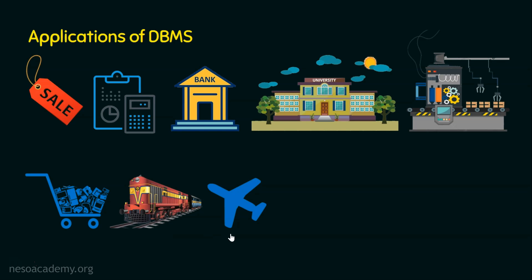Similar to railways, we also have airlines as an application of database management systems. Airlines maintain passenger name record information, customer and passenger information, flight schedules, reservation information, HR and accounting details, route and alternate route details, and login details.